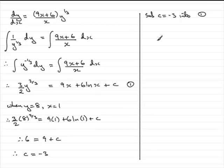If we do that, what we've got is 3 over 2 y to the 2 thirds equals 9x plus 6 natural log of x plus that constant. That constant is minus 3, so it's just minus 3.